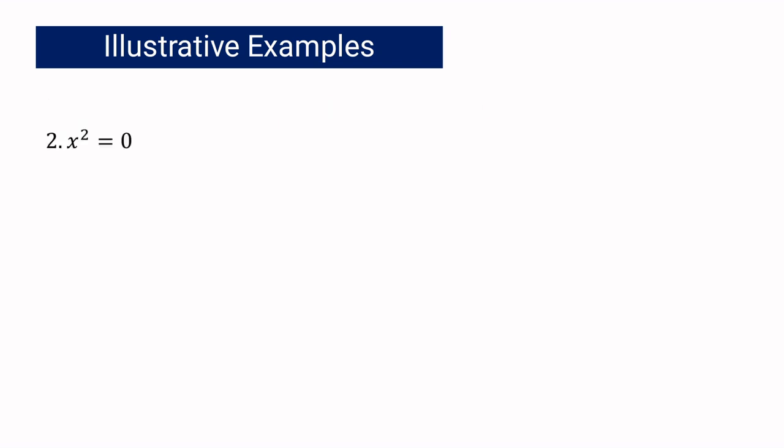Let us have example number 2: x squared equals 0. Is it written in x squared equals k? Yes. k is equal to 0, and based on our principle, if k is equal to 0, then x is equal to 0.